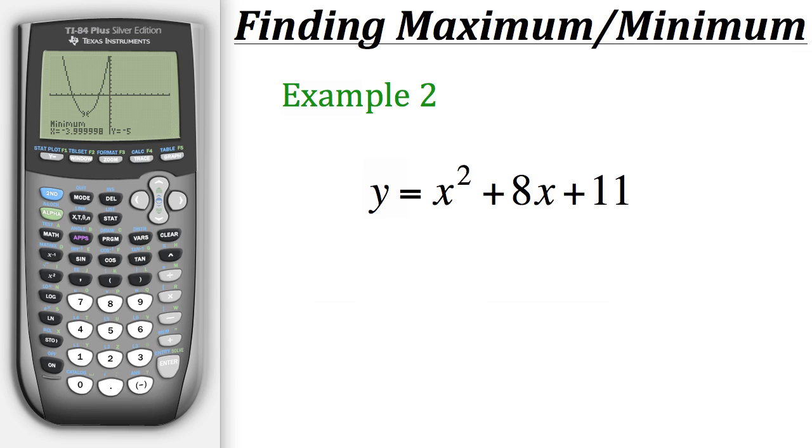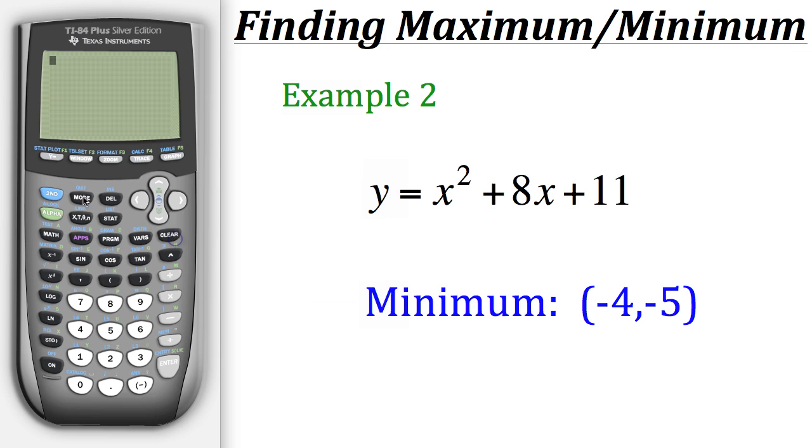So for this particular equation we know that our minimum point will be at negative 4 negative 5. And that's how you find minimum and maximum points on the calculator.